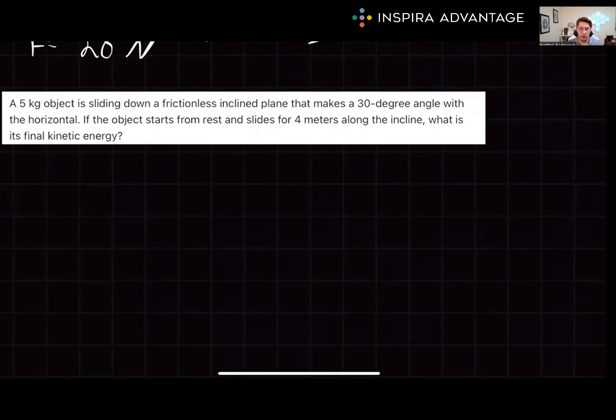We have a five kilogram object sliding down a frictionless incline plane that makes a 30 degree angle with the horizontal. If the object starts from rest and slides for four meters along the incline, what is its final kinetic energy? Take a few minutes and try to solve this one.